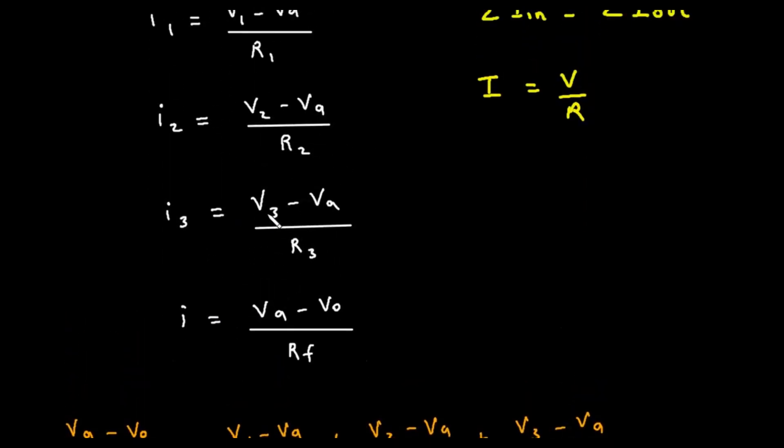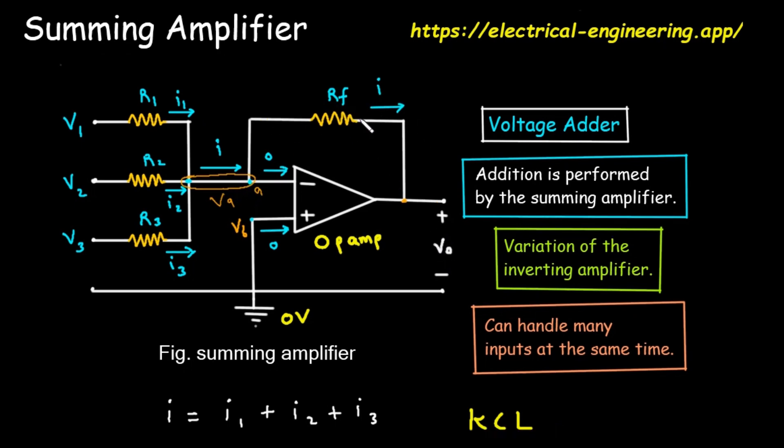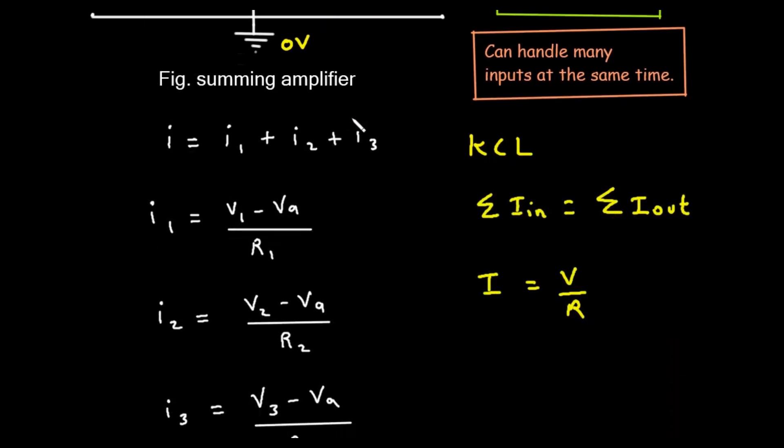Finally, let's look at the feedback current, I. It flows through the feedback resistor, Rf. The voltage on the left is Vi, and on the right is the output, Vo. So, the current I equals (Vi minus Vo) divided by Rf.